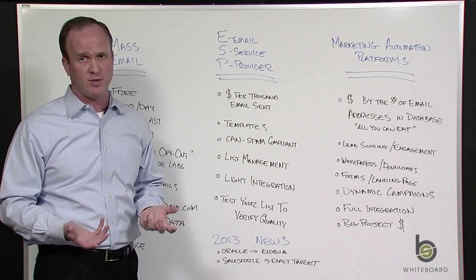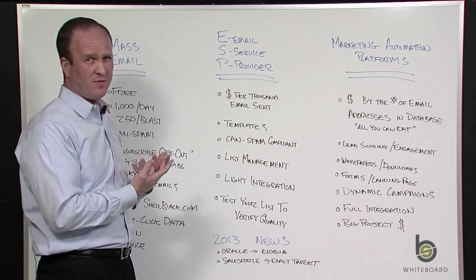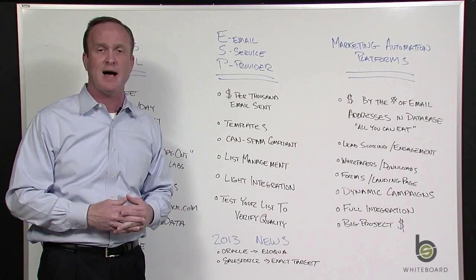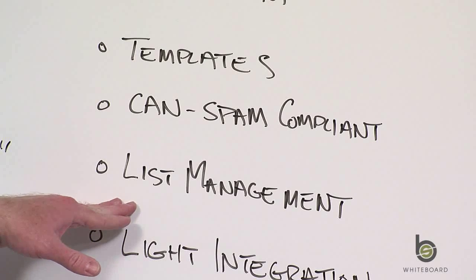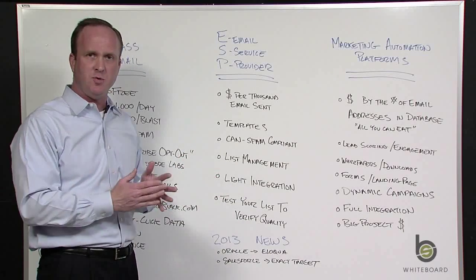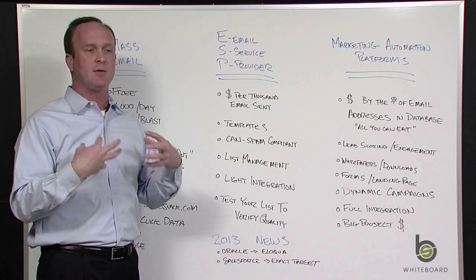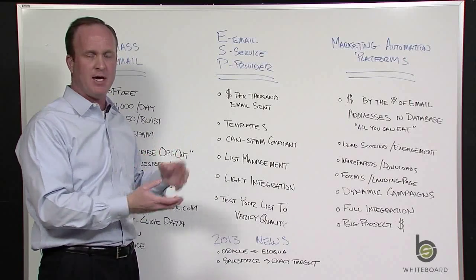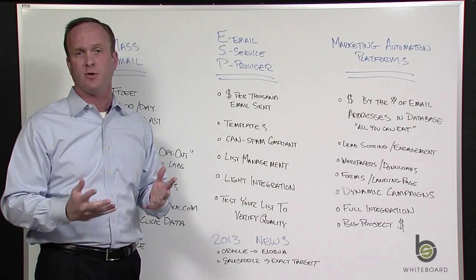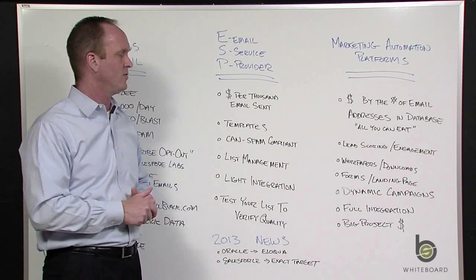ESPs usually give you a lot more templates to choose from, so if you don't want to get deep into HTML, there are more options. Salesforce doesn't provide a whole lot in terms of templates. They will be CAN-SPAM compliant and provide a method for people to opt out. You'll still have to do some list management — probably some uploads and downloads. Depending on which one you pick, there might be some light integration with Salesforce, meaning it might be only one way — not dynamically pulling information — but it may potentially write back to Salesforce to show open rates and click-through rates. Check each vendor and have them do a demo, because it varies quite a bit.